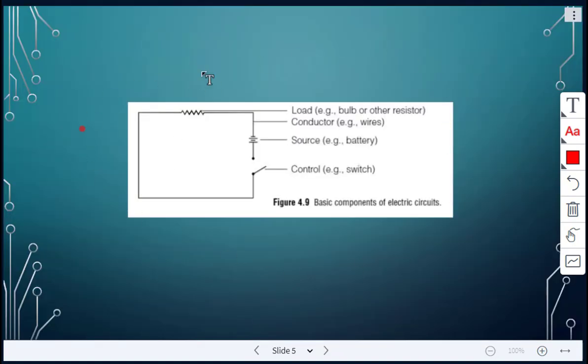So when we look at this diagram here, this diagram is showing those four basic components of electric circuits. So it has the source right here. That is the battery. There's the conductor. Those are wires. So anything like this, those are the wiring. Then we have the load. So this is an example of a load. It could be a bulb or any other resistor. And then there's a control switch to turn this on or off.